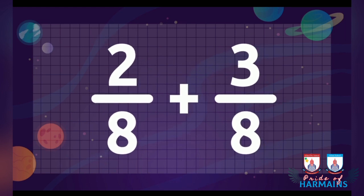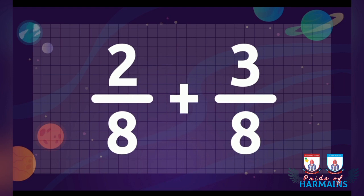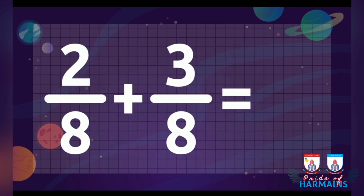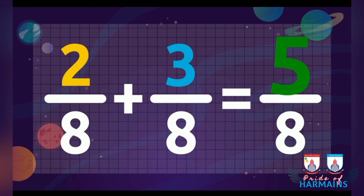So we have 2 by 8, jisko hum ne add karna hai 3 by 8 ke saath. So here we have a common denominator which is 8. So hum denominator ko as it is likhenge 8. Hum ne isko add nahin karenge. Aur jo iske numerator hain, which is 2, aur saath mein jo humare paas doosra numerator hai, 3, hum isko add karte hain. So kya ho jayega? 5. 2 plus 3 is equal to 5. So the answer is 5 by 8.